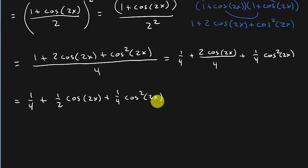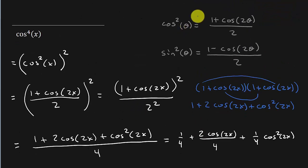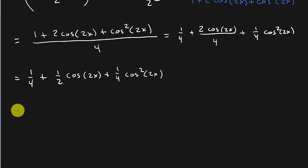All right. So now we still have this cosine squared 2x right here. So we need to apply this formula again. And so this is 1 fourth plus 1 half cosine 2x plus 1 fourth times. Now, let's apply the formula.